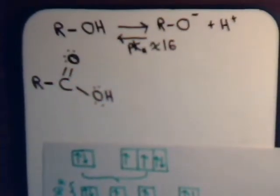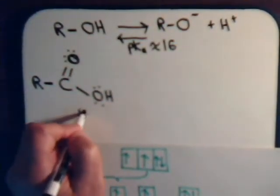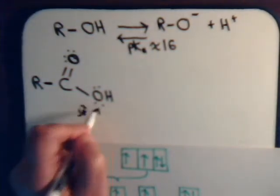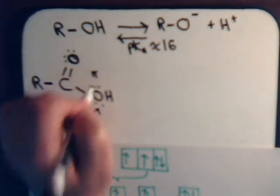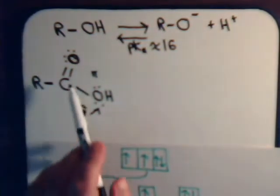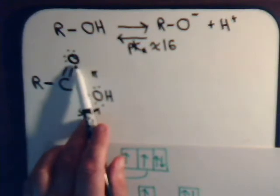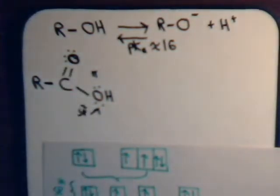This could be the sp2 lone pair, and this could be the pi electron. Now for this carbonyl oxygen, it also is sp2 hybridized, but it does it in a different way.